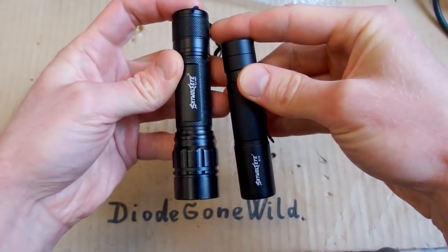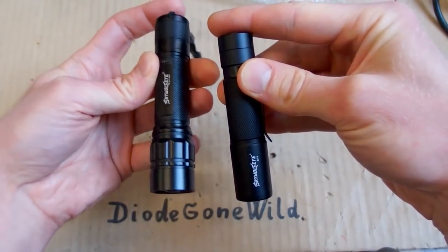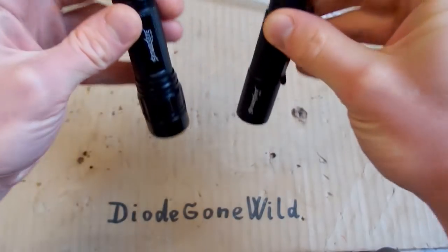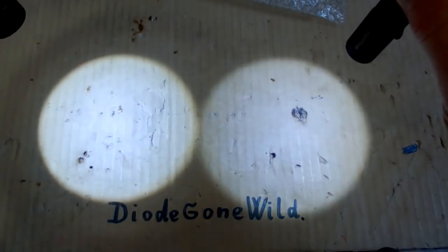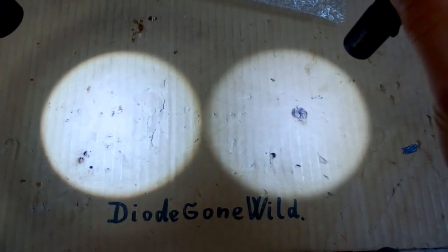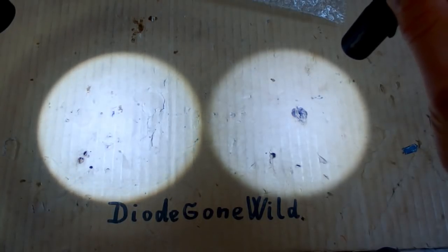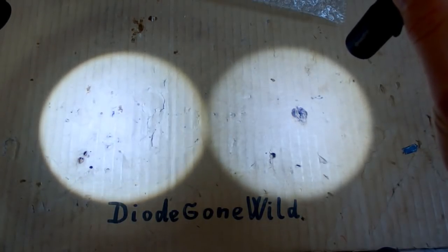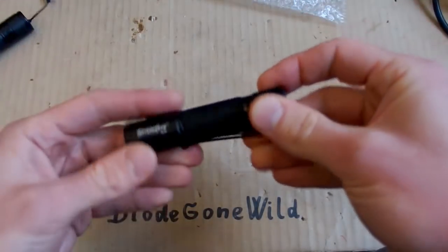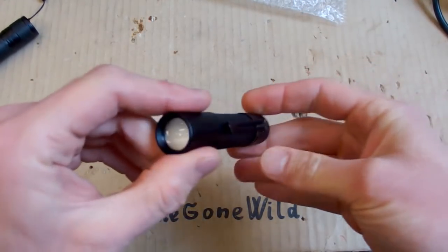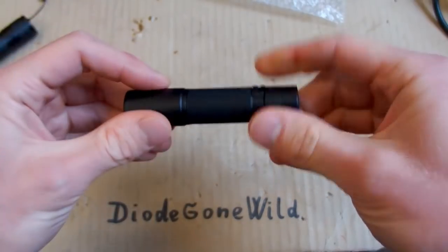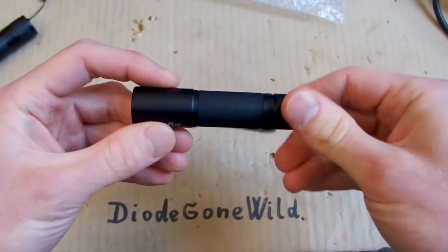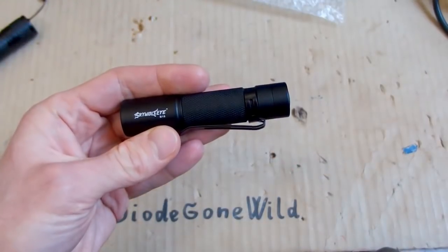Now let's try to compare the brightness with my 18650 lithium ion battery flashlight. As you can see, the 18650 flashlight is a bit brighter, but not too much. So this one actually is quite bright for its size and for a single AA battery flashlight. It really is quite powerful for such a tiny flashlight.